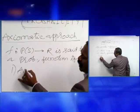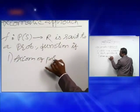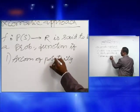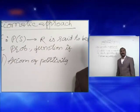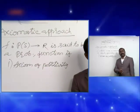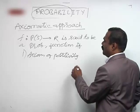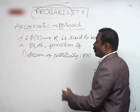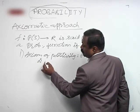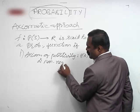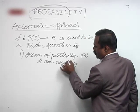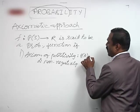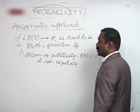Axiom one: axiom of non-negativity, also called axiom of positivity. The probability will never be negative — it should always be between 0 and 1. More precisely, P of A should always be greater than or equal to 0. That is the axiom of non-negativity.